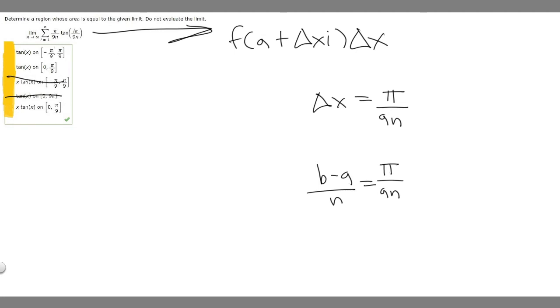What about this one? Well, this one, if we do pi over 9 minus 0 over n, it's going to give us pi over 9n. So that one will work. What about the top one? We already determined that this one doesn't work, and these have the same domain, so this one's not going to work. So we're basically left with these two.